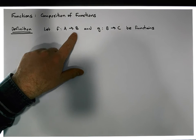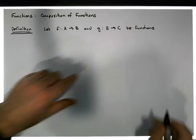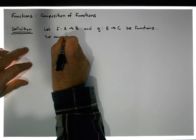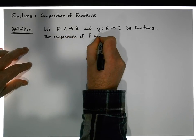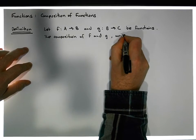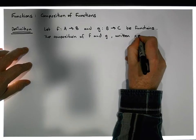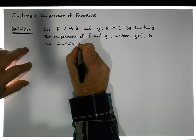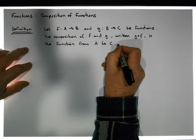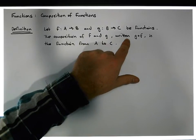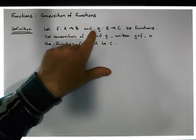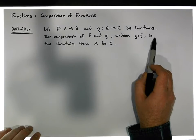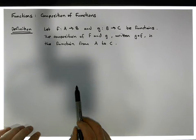So let f be a mapping from A to B and g be a mapping from B to C, and let them be functions. Then the composition of f and g — typically written g after f, or g∘f — is the function from A to C. So if we have function f mapping A into B and function g mapping B into C, the composition g∘f is simply a mapping from A directly into C.